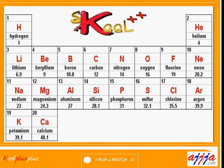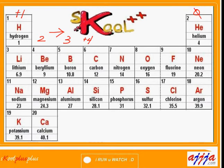On the left-hand side is hydrogen, number one — the first column. The first column has a charge of positive one, positive two, positive three, positive four going across. Going from the right-hand side: this is negative one, negative two, negative three, and negative four.